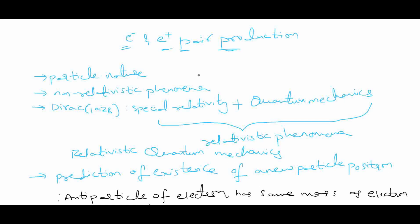By combining non-relativistic quantum mechanics with special relativity, Dirac in 1928 developed relativistic quantum mechanics by combining special relativity and quantum mechanics.